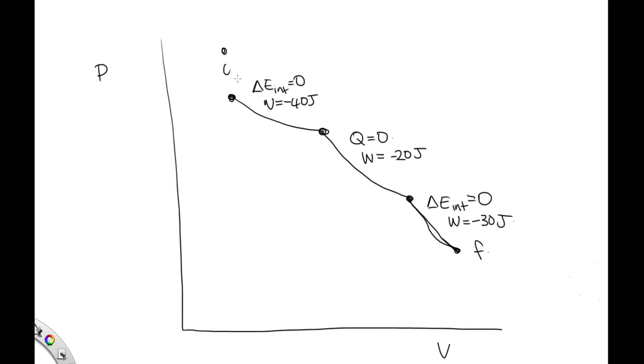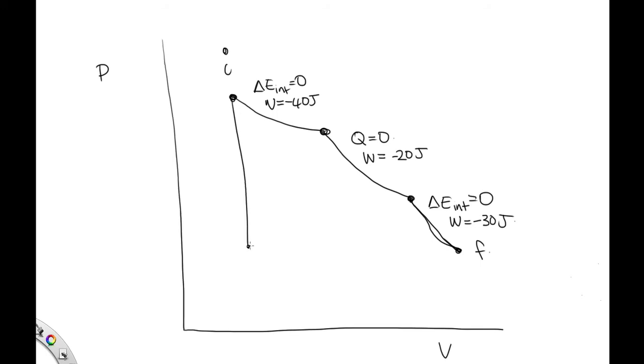Path two consists of a pressure reduction at constant volume, and then a volume increase at constant pressure. So this is path two, and here's our path one.